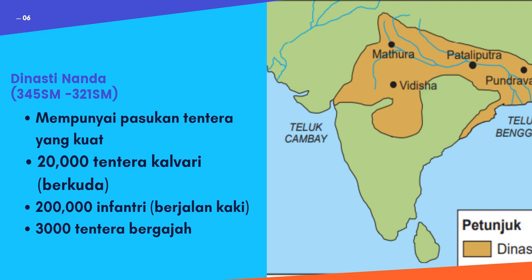Dalam bentuk fizikal, kita fokus kepada dinasti-dinasti yang hebat tadi. Kita ambil dulu Dinasti Nanda, bermula sekitar 345 sebelum Masihi hingga 321 sebelum Masihi. Kawasan dekat Magada tu, dia berjaya menguasai beberapa Maha Janapada yang lain. Bagaimana dia boleh berjaya menguasai kawasan tu? Pertama, mempunyai pasukan tentera yang kuat. Dia ada 20,000 tentera Kalvari - tentera berkuda.